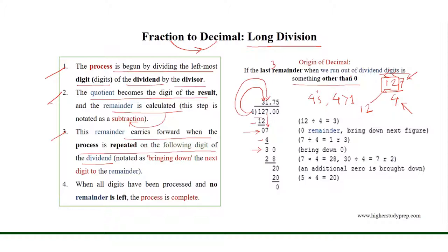When we have run out of dividend digits, in order to proceed we need to introduce a decimal both in the dividend and the result. The decimal point in the result is right above the decimal point in the dividend. We know that any number can be expressed as a decimal; therefore 127 is equal to 127.0.